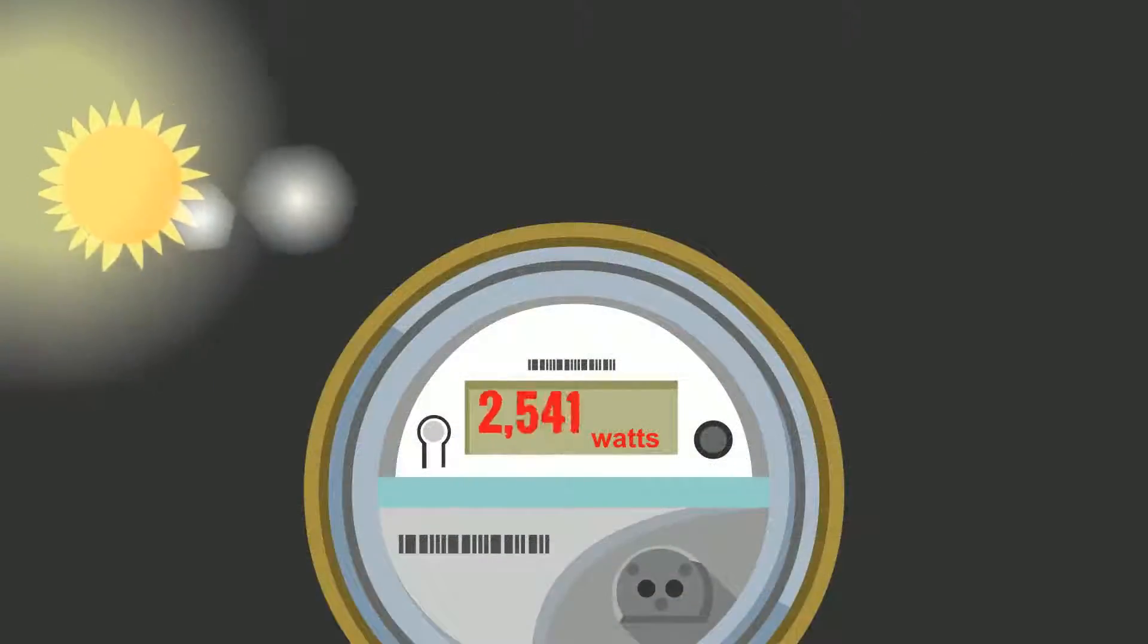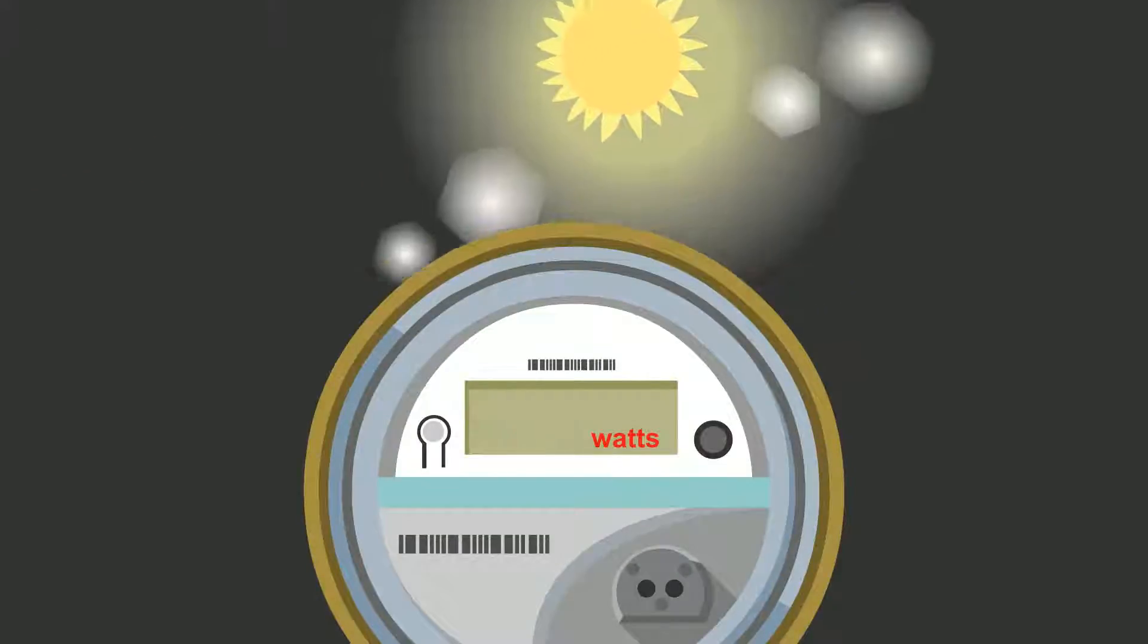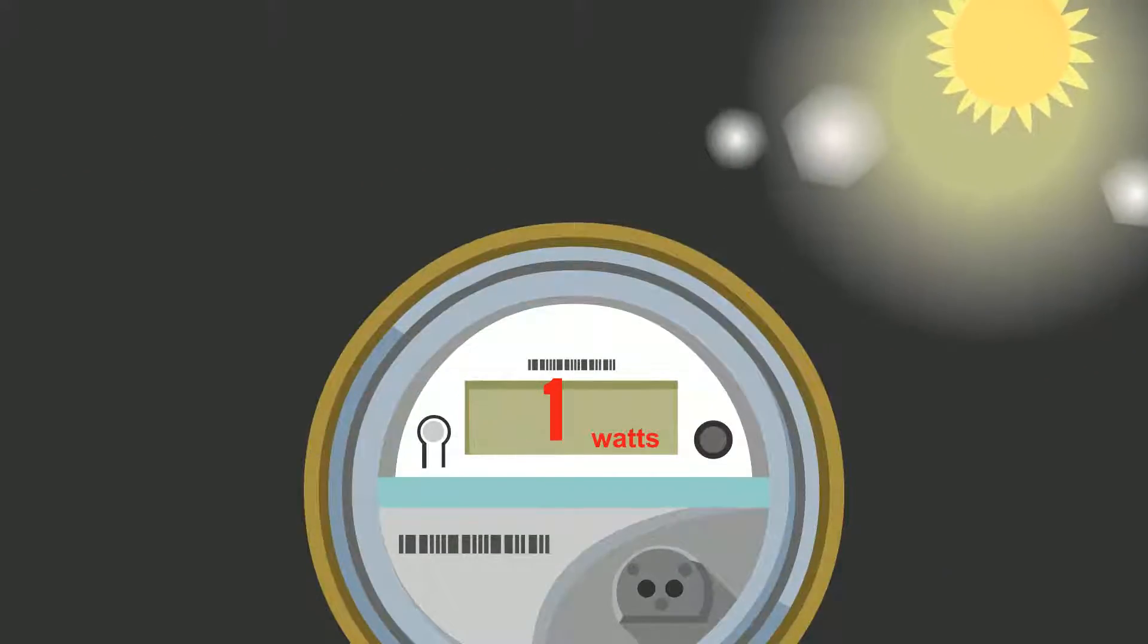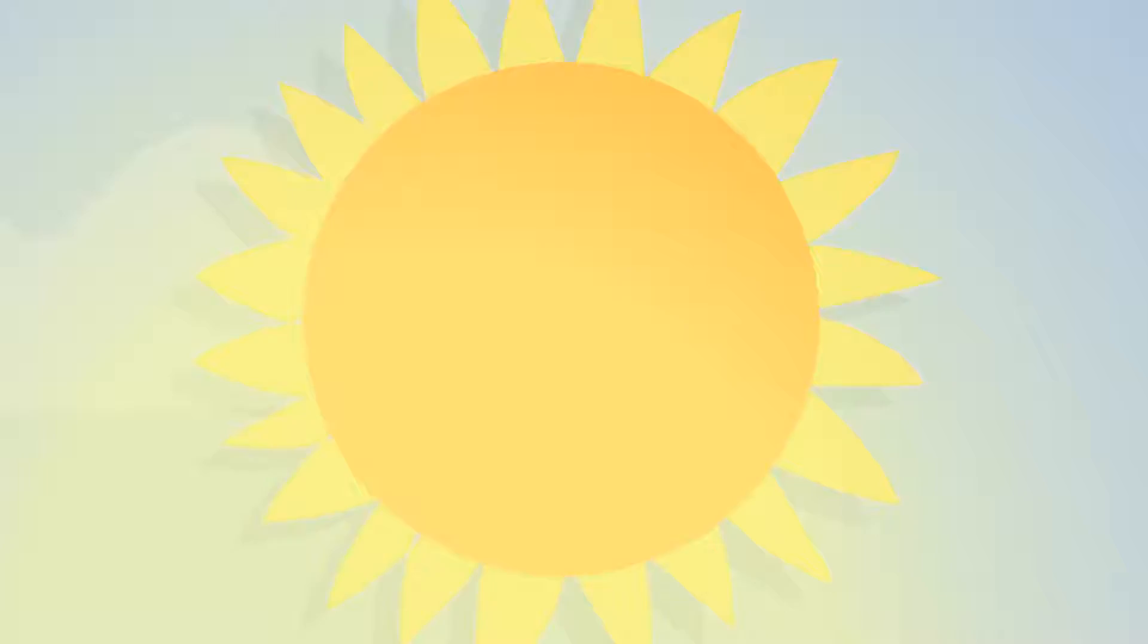So as the sun goes up, the solar system makes more and more power, and as the sun goes down, the solar system makes less and less power, peaking for about 5 hours during the middle of the day.